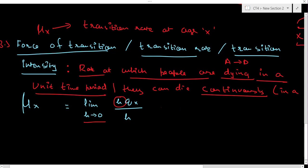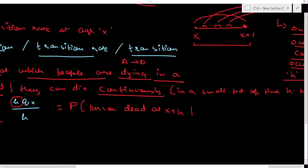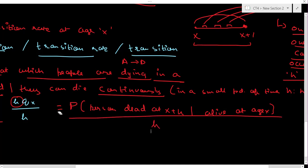Formally, hqx is the probability that a person aged x is in the dead state at age x+h, given that he was alive at age x — that is, he dies between ages x and x+h. Dividing this probability by h and taking the limit as h→0 gives the annual rate of death, μx.